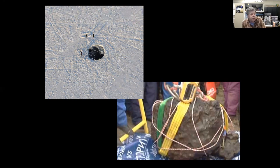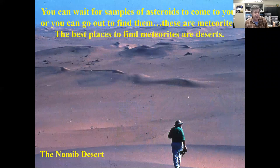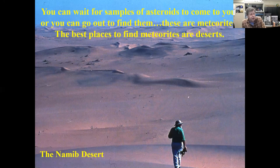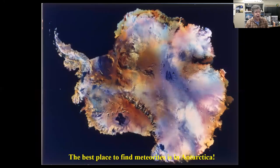You can wait for meteorites to come to you, or you can go looking for them — that's something we do every year. In Texas, if you go out to West Texas and walk around dry lake beds, you can find meteorites. This is the Namib Desert — I was there in 1990 and we walked around for several weeks and found meteorites. You almost can't avoid finding them out there. But the best place to find meteorites on Earth is in the cold desert of Antarctica.